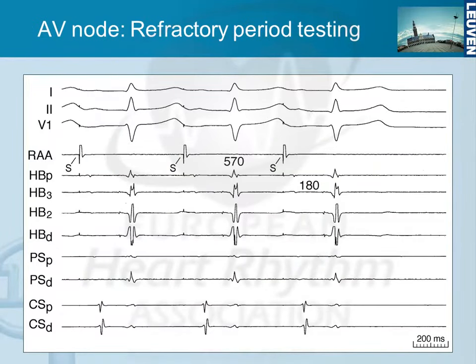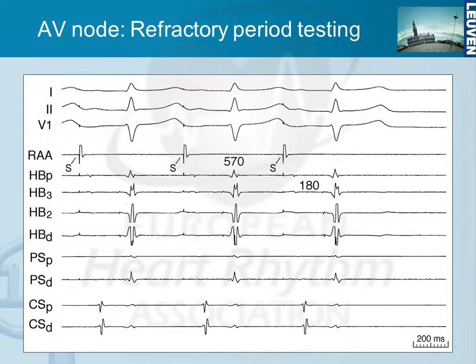At the beginning of an EP study, you do some extra stimulus testing. You have a base train of, for instance, 600 milliseconds, then you introduce an extra stimulus and gradually decrease its coupling interval, looking at the AH interval. On the HIS bundle recordings you record the HIS bundle deflection — the atrial deflection — and here you see an AH of 180 milliseconds. I think all of you will agree this is conduction over the fast pathway.